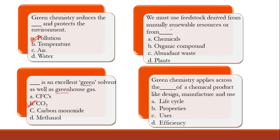We must use feedstock derived from annually renewable resources. Not from synthetic chemicals, not from organic compounds in general, but from abundant waste — if waste is there and you're using it, then obviously you should use that feedstock.